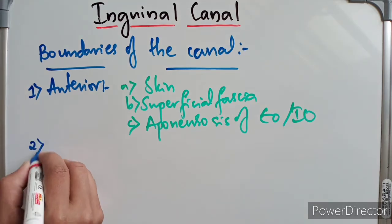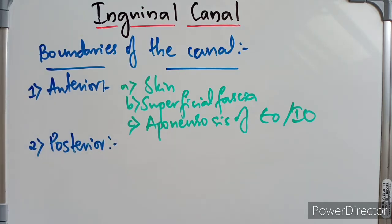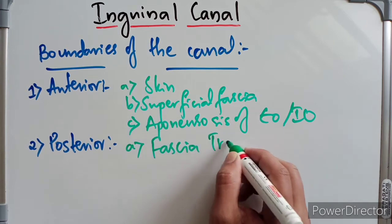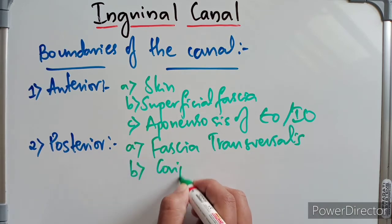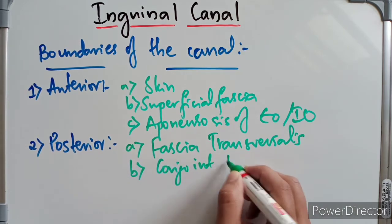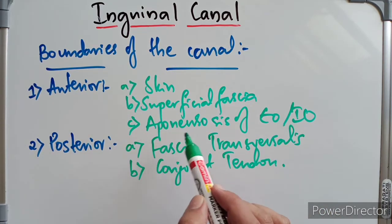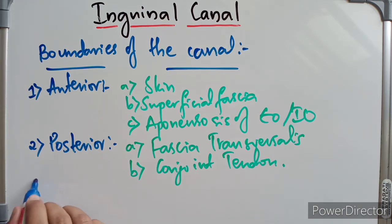The posterior wall is formed, from deep to superficial, by first the fascia transversalis and then the conjoint tendon.